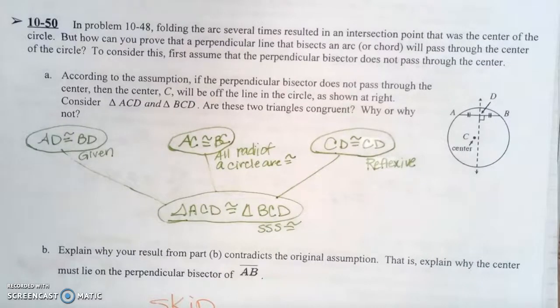According to the assumption, if the perpendicular bisector does not pass through the center, then the center C will be off the line in the circle as shown at right. Consider triangle ACD and triangle BCD. Are these two triangles congruent? Why or why not?